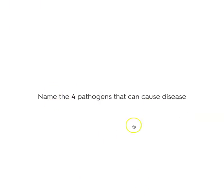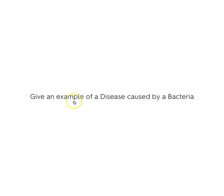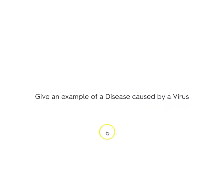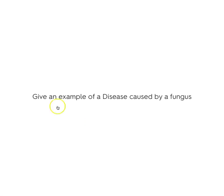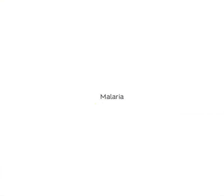Name the four pathogens that cause disease: bacteria, virus, fungus, parasite. Give an example of a disease caused by bacteria: strep throat, tuberculosis. Give an example of a disease caused by a virus. Give an example of a disease caused by a fungus: athlete's foot. Give an example of a parasite: malaria, also tapeworms.